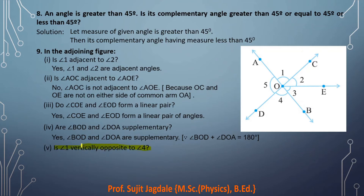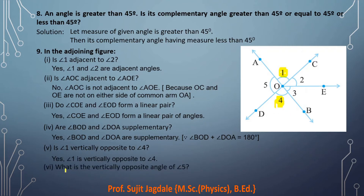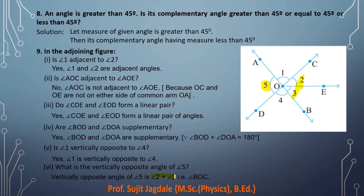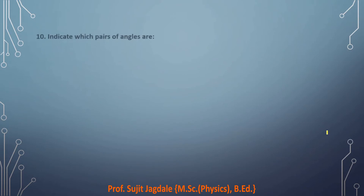Is angle one vertically opposite to angle four? Lines AB and CD intersect each other, and when two lines intersect, vertically opposite angles are obtained. So yes, angle one and angle four are vertically opposite angles. The vertically opposite angle to angle five is angle two plus angle three combined — angle BOC is the vertically opposite angle for angle five, which means angle AOD.